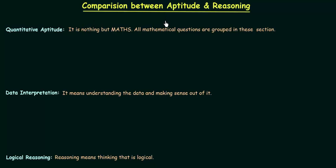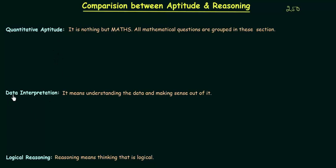Welcome to the first lecture in a series of lectures on reasoning and aptitude. We will have more than 250 lectures in this series. It is a long journey and we will start with basic definitions. First we will try to understand quantitative aptitude with one example, then data interpretation, and finally logical reasoning.